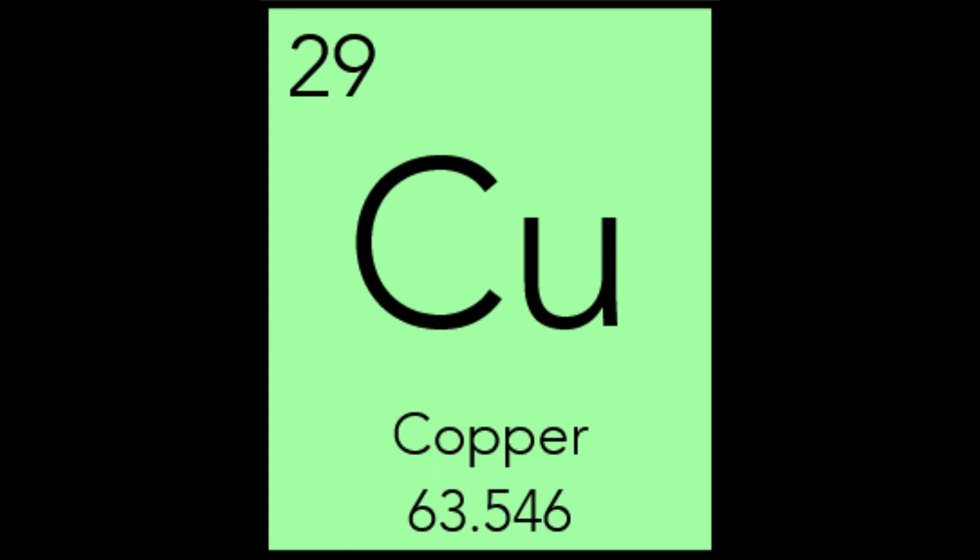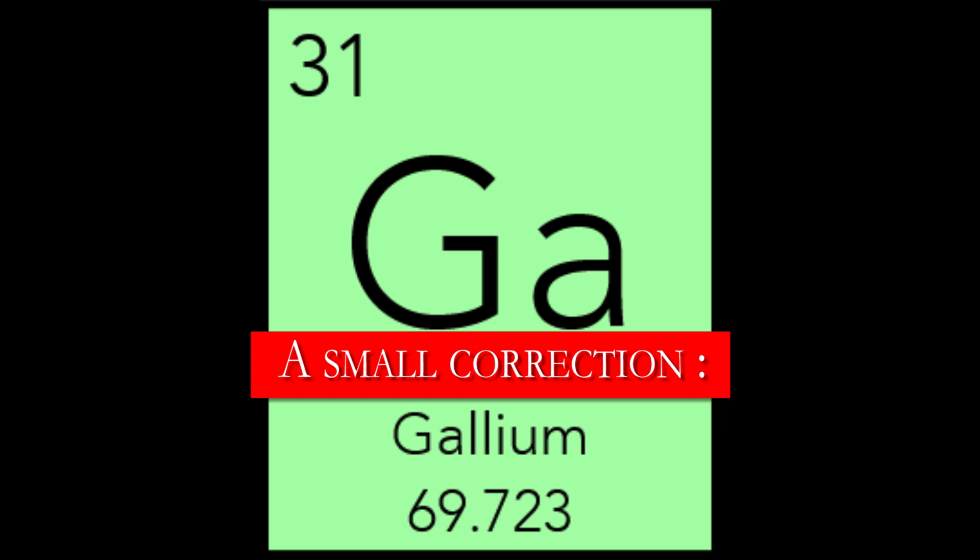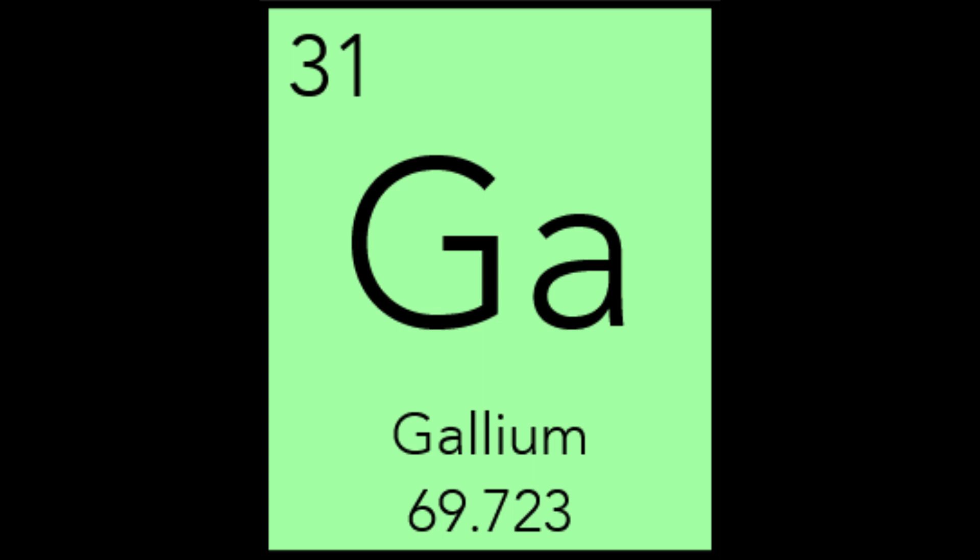Zinc is found in spiky crystals and perhaps inspired the alchemist Paracelsus to call it Zinc, which means prong or tooth in German. Zinc has many useful compounds and is used in dietary supplements, anti-dandruff shampoo, and paints. The most important use of Zinc, Zn, is in coating iron or steel in a process called galvanization. Gallium derives its name from Gallia, the Latin name for Gaul, ancient France. The discoverer, Lecoq de Boisbaudran, named it after his native land as well as a pun on his own name — Lecoq means the rooster, or in Latin, gallus. Gallium is one of the elements predicted by Dmitry Mendeleev based on his periodic table of elements.